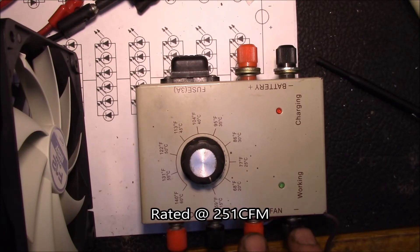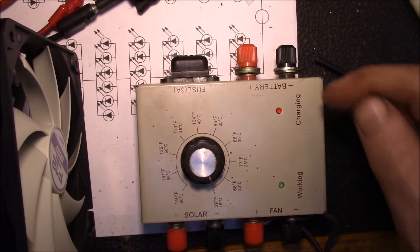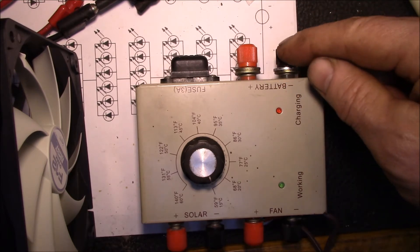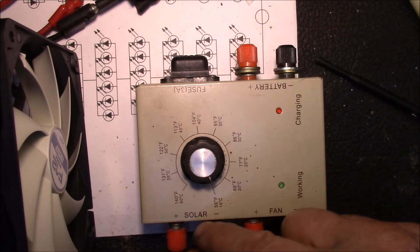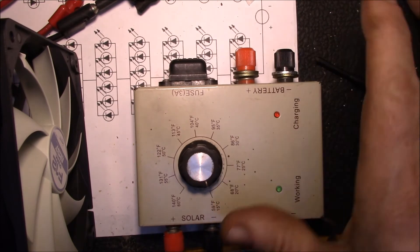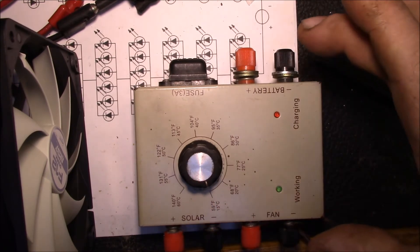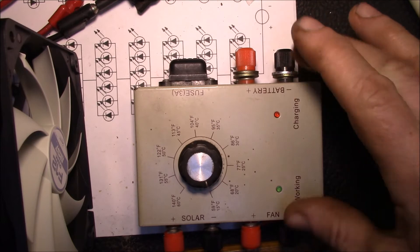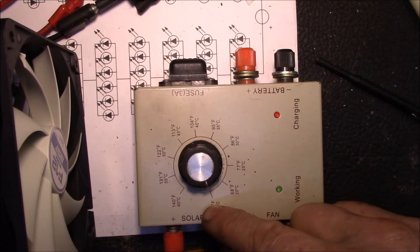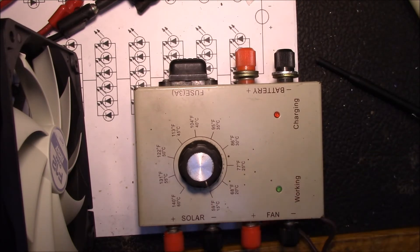You could attach the fan to the fan terminals here, and then optionally you could hook up a 12 volt lead-acid battery here and then have the solar panels charge the battery. You could also have the batteries operate the fan if the sun went behind a cloud.